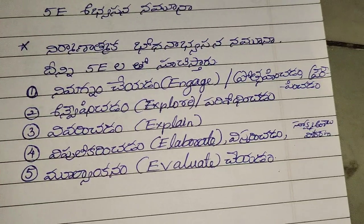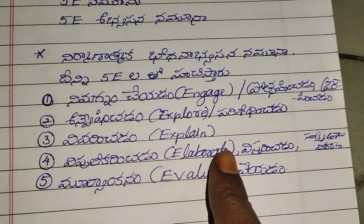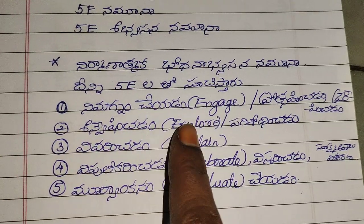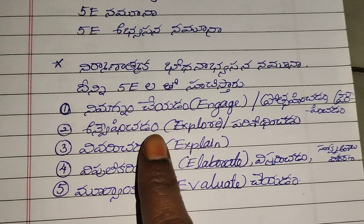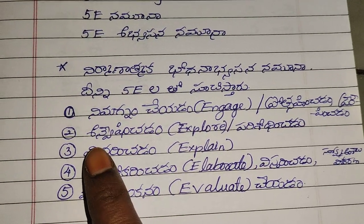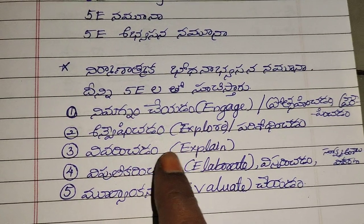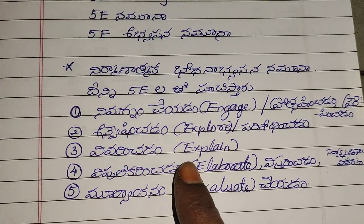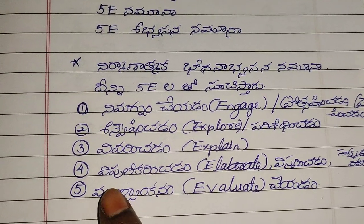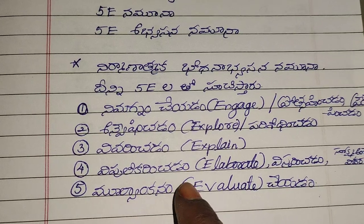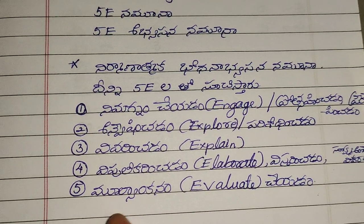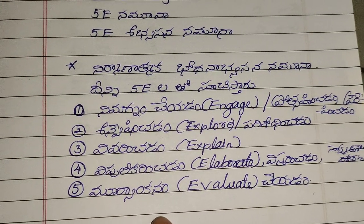Let's name the 5E Learning Model steps in English. First step: Nimagnam. Second one: Unwish. Third one: Viveri. Fourth one: Vipuli. Fifth one: Mulya.